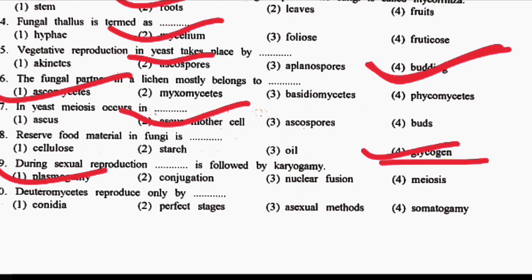Next question: Deuteromycetes reproduces by which method? The correct answer is Option 3, that is Asexual Method, because Deuteromycetes are imperfect fungi and their sexual reproduction is not known.